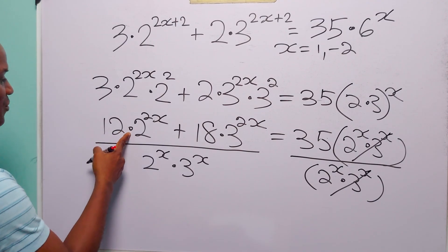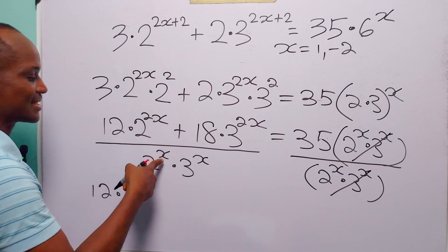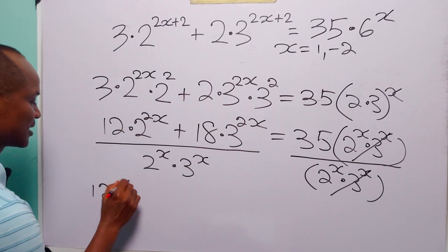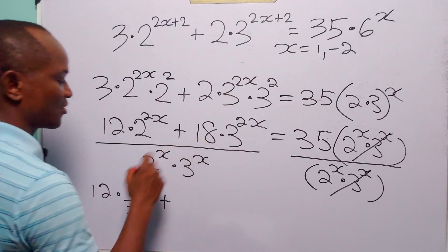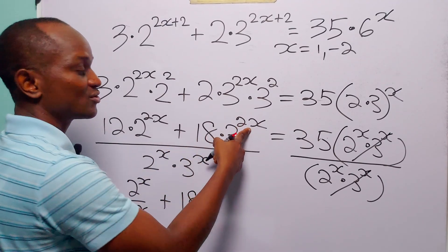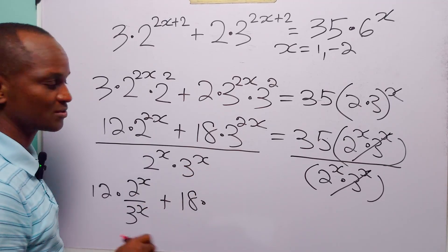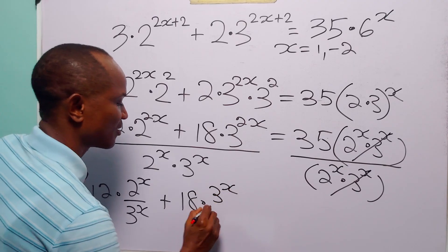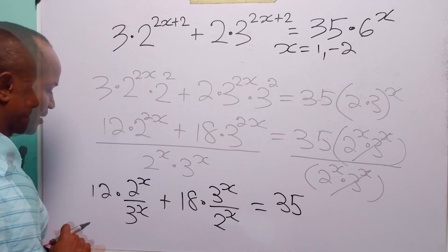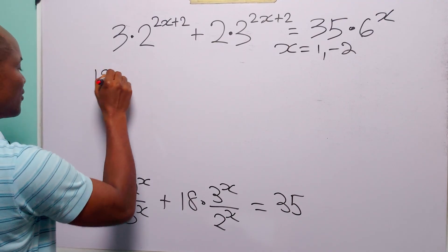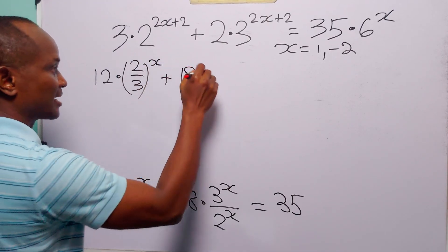After dividing, the exponents subtract: 2x minus x gives x throughout. The first term becomes 12 times 2 to the power x over 3 to the power x, and the second term becomes 18 times 3 to the power x over 2 to the power x. This simplifies to 12 times (2/3) to the power x plus 18 times (3/2) to the power x equals 35.